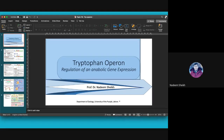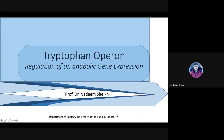The last lecture we talked about catabolic gene expression, in which gene expression is used to break complex compounds into simple compounds. Today's example is the opposite of that particular method — that is anabolic gene expression.